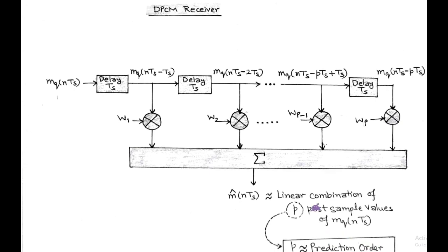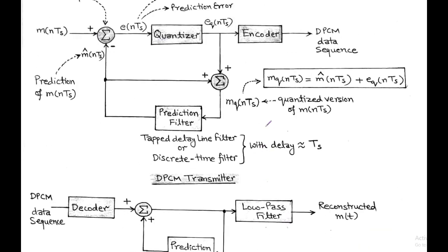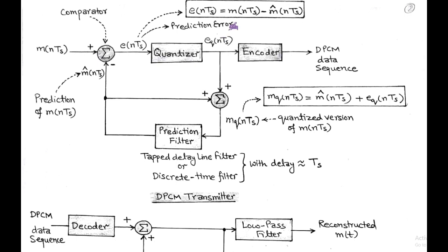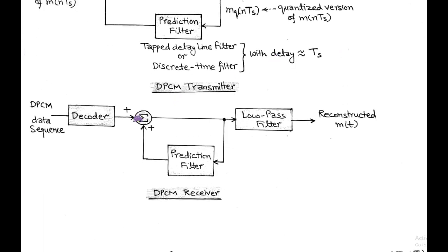After quantization, the quantized prediction error gets encoded and converted into a unique code data sequence called differential PCM. This data sequence of differential PCM is transmitted via channel and received by the differential PCM receiver.